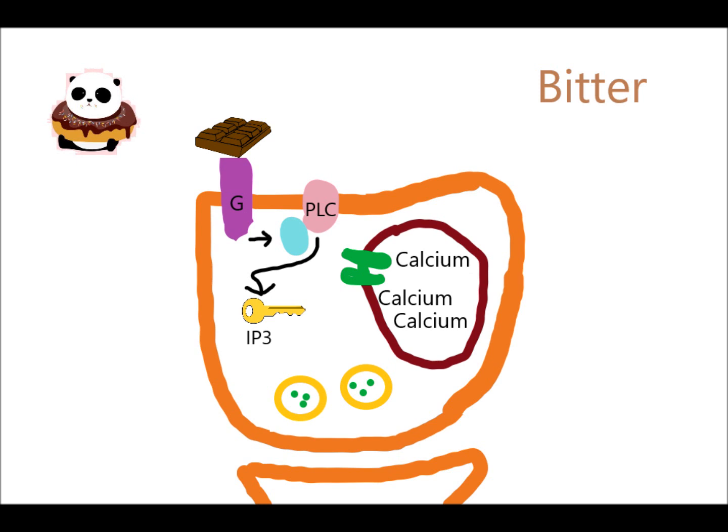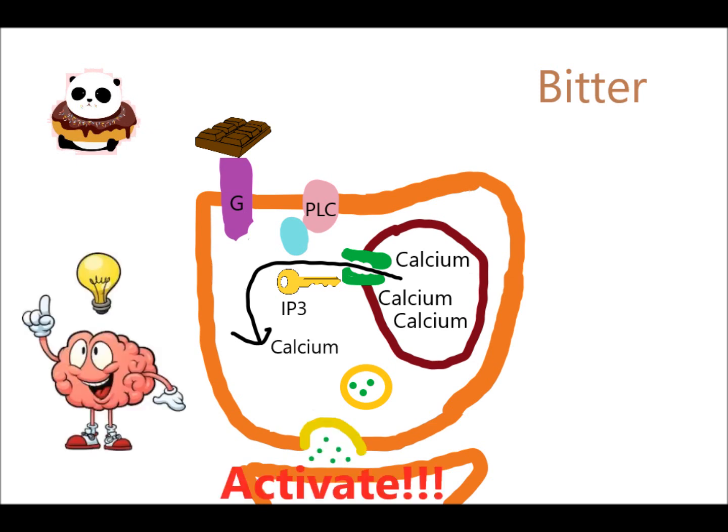This key is then used to open the gate for a channel that is inside the receptor, which is full of calcium. After the gate is open, calcium fills the rest of the cell. And once again, the influx of calcium pushes the neurotransmitter out of the cell. This sends a signal to the brain that we're eating something bitter.